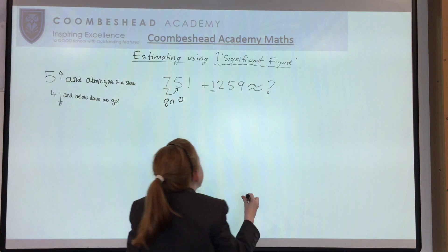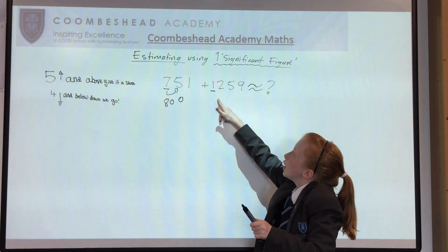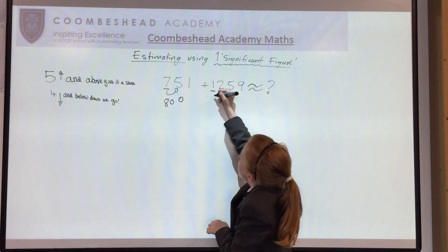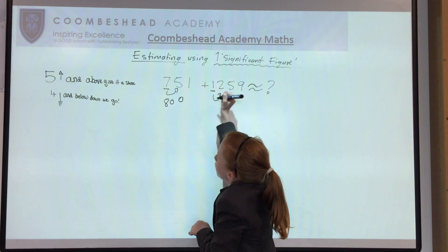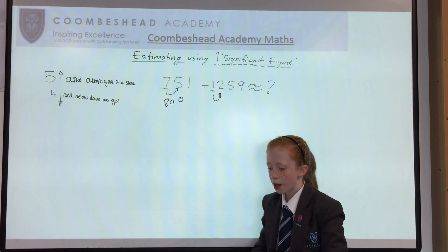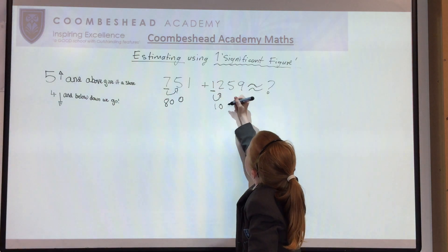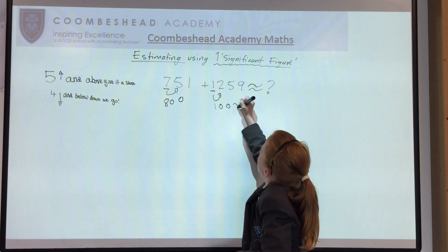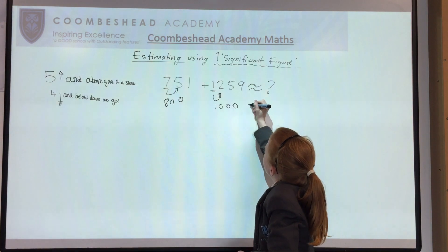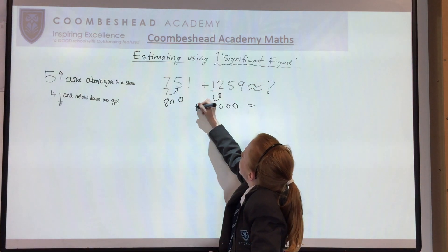And then we have 1000. Look to the next number, which is a 2. Since 2 is below 4, it goes to 1000. And then we add these two, which equal 8,000.